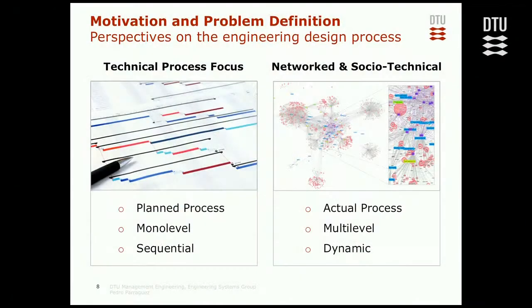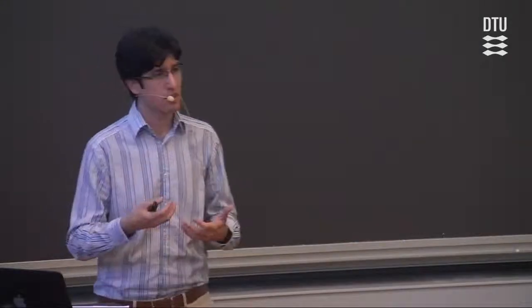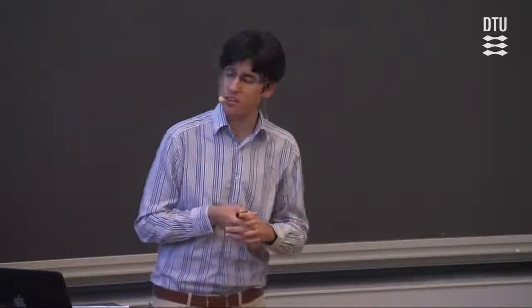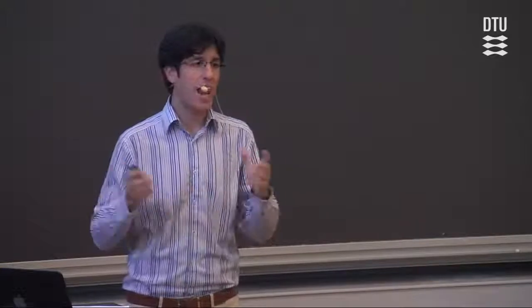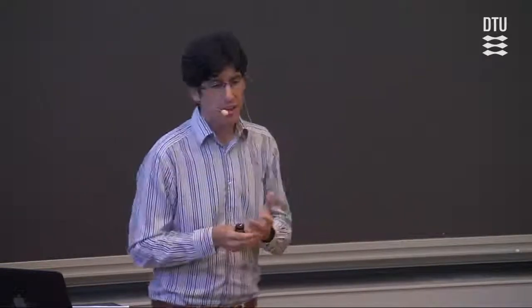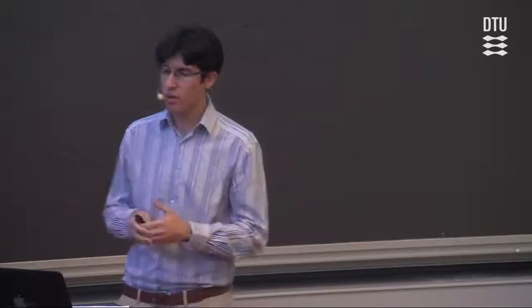The other extreme sees the design process through a network and socio-technical perspective. This is about the actual process — a description of what is going on — and it's much more bottom-up. Ideally, we would like to see all the things that happen and reconstitute what the actual process is. Therefore, this can be multi-level, with rich information available, and it's dynamic rather than sequential — a constant change of things happening that doesn't necessarily follow a logical structure. This is where this thesis focuses. It's not about thinking this view is better than the technical focus, but rather allowing comparison of these two perspectives and empowering visualizations that provide an overview of the process.